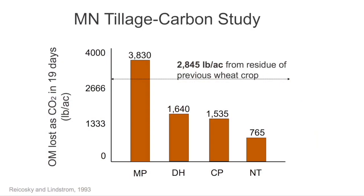What he found with moldboard plow: for just one plowing over 19 days, they captured CO2 and found they were losing about 3,800 pounds of CO2 as organic matter. CO2 is invisible — a tasteless, invisible gas — but this machine measures it. With different tillage machines, the loss was a lot less than moldboard plow. With no-till, you're at about 700-some pounds, which is kind of your natural gas exchange with the atmosphere. What you see is that only about 2,800 pounds of carbon was given to the crop that year from the wheat, so the moldboard plow was pulling out 1,000 pounds more organic matter than what was being produced.